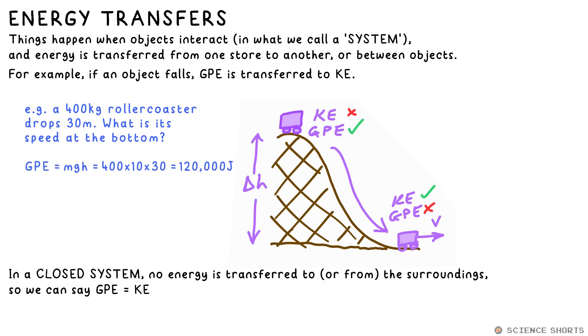So if it had this many joules of GPE at the top, it must have the same number of joules at the bottom, but now that's kinetic energy. We can then rearrange the kinetic energy equation to find its speed, for example.